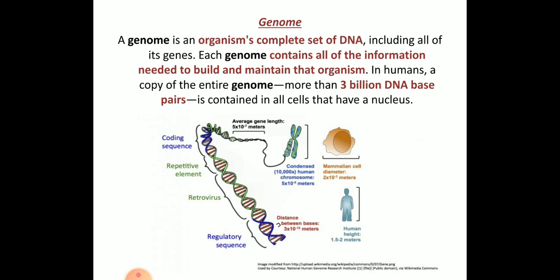The last concept in this talk is the genome. The genome is nothing but the complete set of DNA, which includes all the information needed to build the organism. For example, it is a mixture of both the father's and mother's genes. In humans, the entire genome has 3 billion DNA base pairs, which are contained in all cells that have a nucleus. The genome is defined as the complete set of DNA of an organism, which contains the information and helps in building and maintaining the organism.